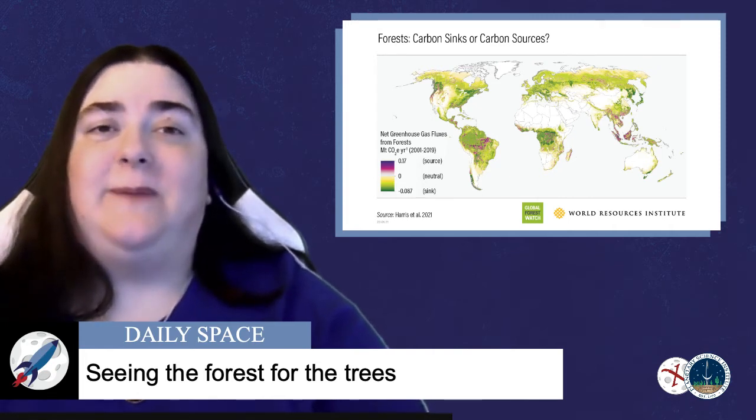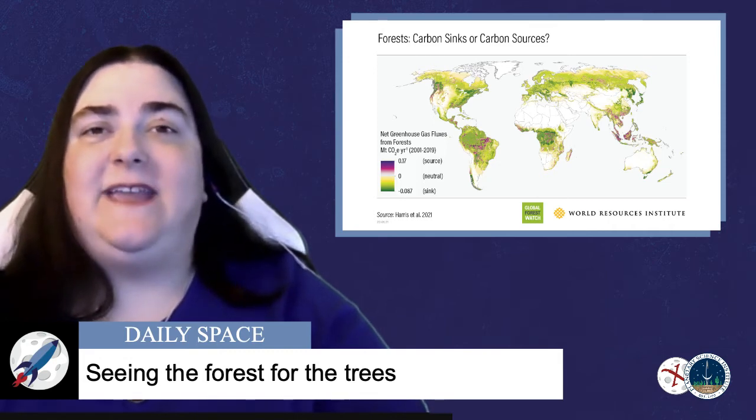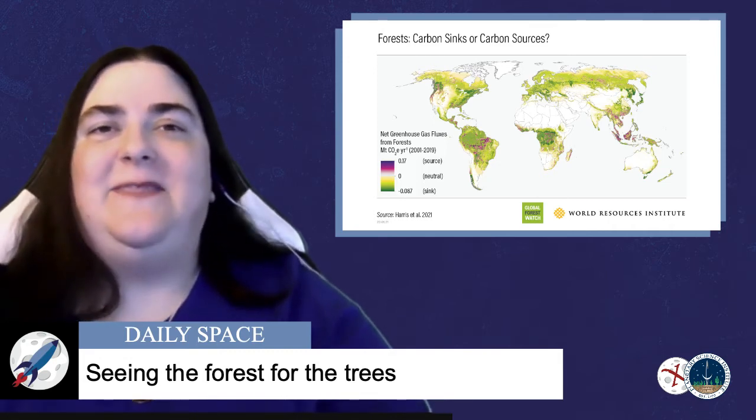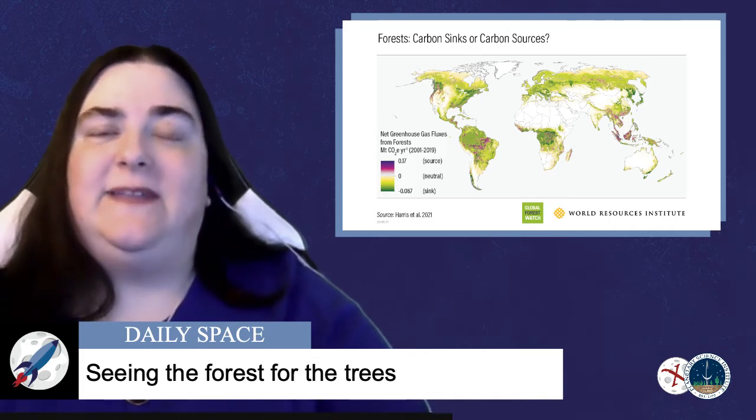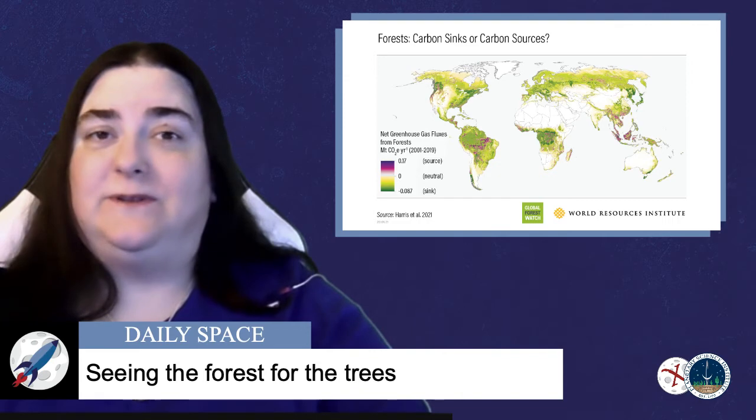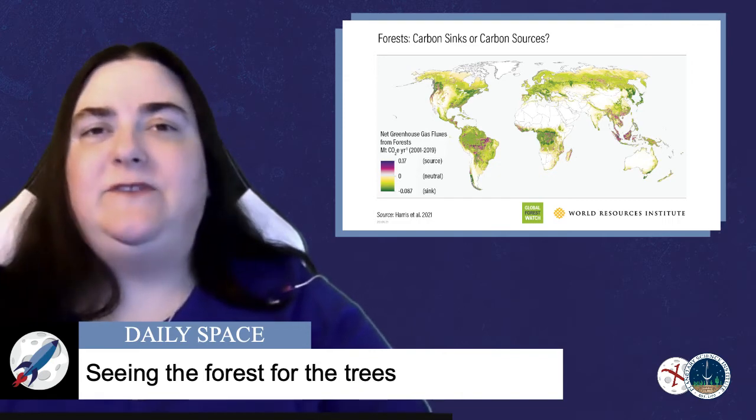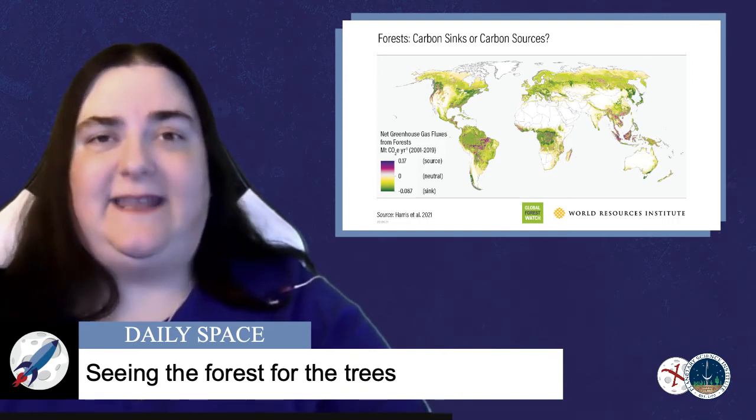The Global Forest Watch published a new paper in Nature Climate Change last month that presented a current forest carbon flux map. The paper looked at just how much carbon dioxide we can sink into the current levels of forestation around the world. First, they measured the biomass of the forests with NASA's ICESAT data.